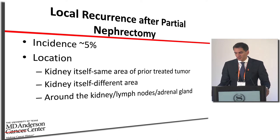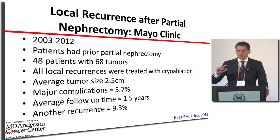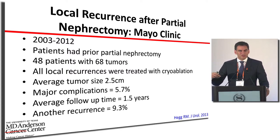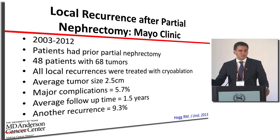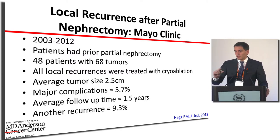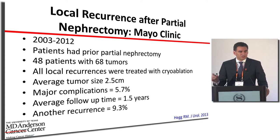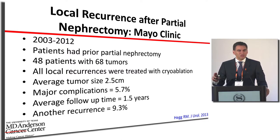The Mayo Clinic experience shows that after partial nephrectomy failure, patients can be salvaged with ablation — and vice versa. If ablation fails, we can rescue with partial or radical nephrectomy. The key is not to have just one tool; you need multiple tools and use each differently for each patient. It's important to seek treatment at a center that can offer multiple options.